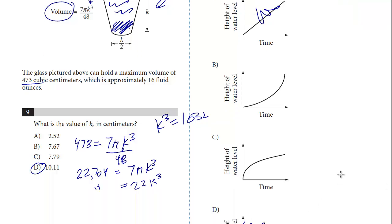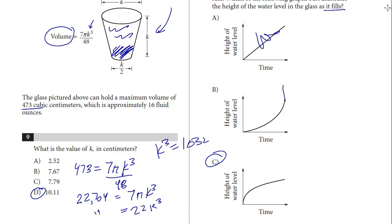Definitely not the flat line, which has no slope. We want a very fast increase that tapers off. Looking at all the choices, the answer is C, because the graph gets steeper toward the top — it takes longer to fill because the diameter is larger at the top. So the answer here is C.